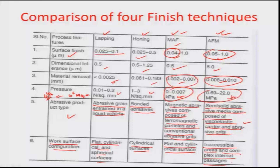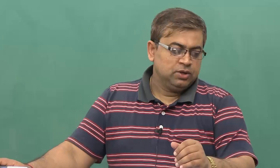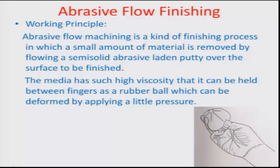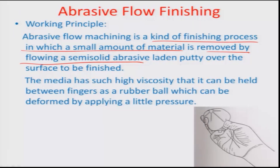If you want to machine the internal contour of a pipeline, abrasive flow machining is the best process. In abrasive flow machining (also called flow finishing), a small amount of material is removed by flowing a semi-solid abrasive-laden putty over the surface to be finished. It is a ball made out of this putty — a highly viscoelastic material — where abrasive grains are trapped within the medium.